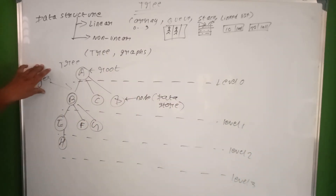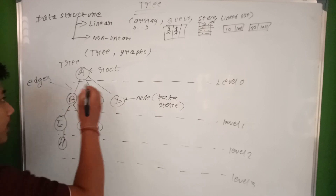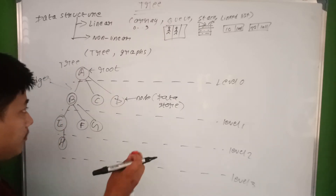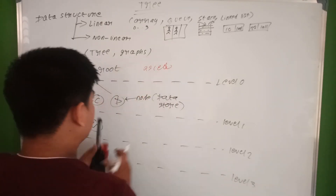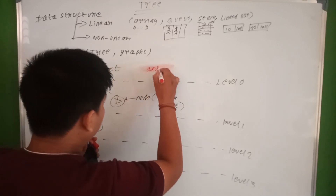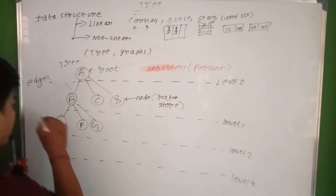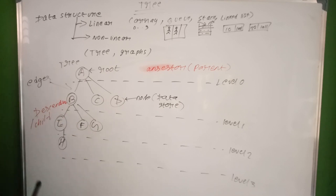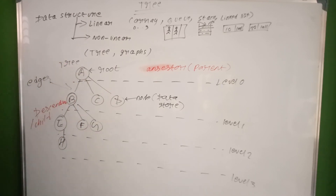We can include ancestry or descendants. A is the ancestor, and B is the descendant. A is a parent, and we also have sibling relationships. The hierarchy is: grandparent, parent, child, and grandchild.